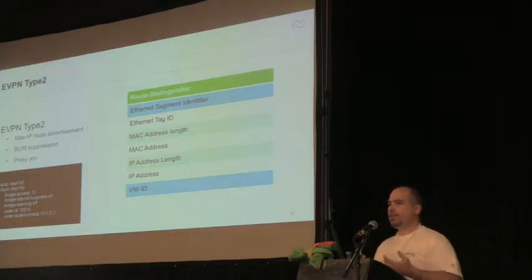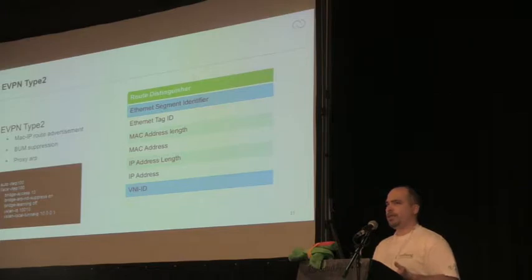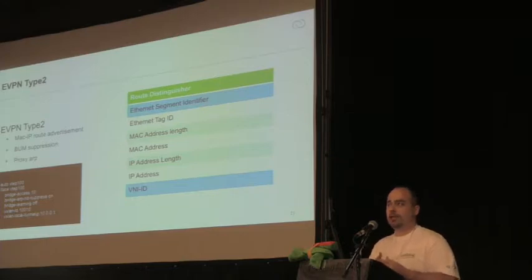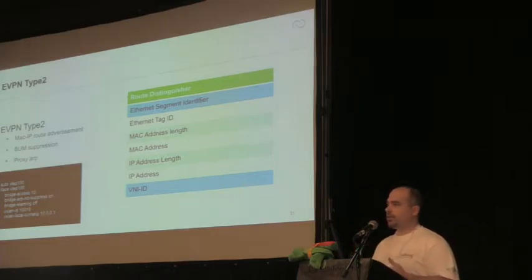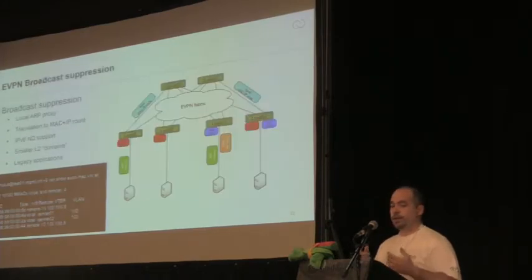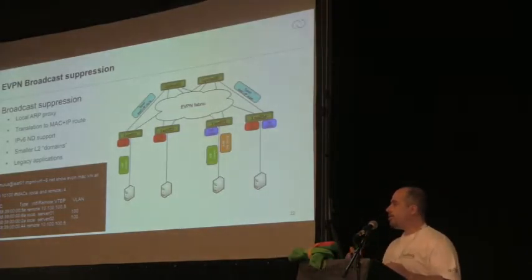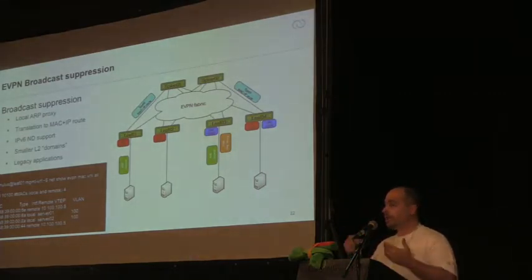The Type 3 message is sufficient to build all your tunnels and have your network working, but it means you'd still depend on data-plane learning of MAC addresses — back to the same broadcast flooding problem. That can be prevented using EVPN Type 2 updates. With MAC-IP advertisement, every local node learns the MAC and IP combination of attached nodes and does broadcast suppression, with a local proxy ARP replying to ARP requests. Everything is suppressed and you don't have flooding over your network.